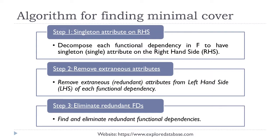Minimal cover for a set of functional dependencies f can be computed using three simple steps. Step 1 insists on reducing the right-hand side of all functional dependencies into a singleton attribute. This can be achieved using the simple decomposition rule. Step 2 removes extraneous attributes if any. Extraneous attributes are simply redundant attributes which can be inferred from other attributes available on the left-hand side of the same functional dependency. Finally, in Step 3, we eliminate the functional dependencies that are redundant. We shall see more on each step with an example.